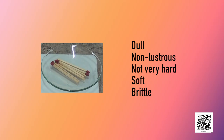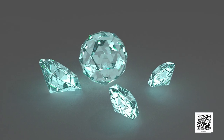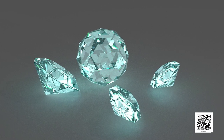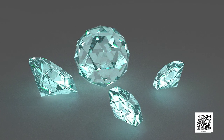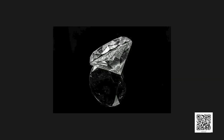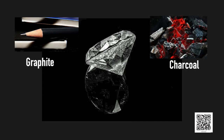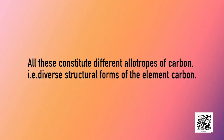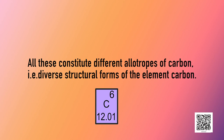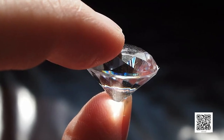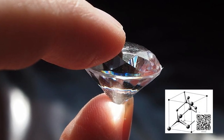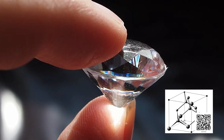Non-metals are dull, non-lustrous, either not very hard, soft, or brittle — except for diamond. In contrast, diamond is very hard and shiny. In fact, it is made up of carbon atoms similar to that of graphite and charcoal. All these constitute different allotropes of carbon — that is, diverse structural forms of the element carbon.